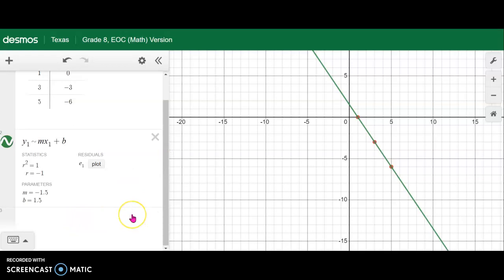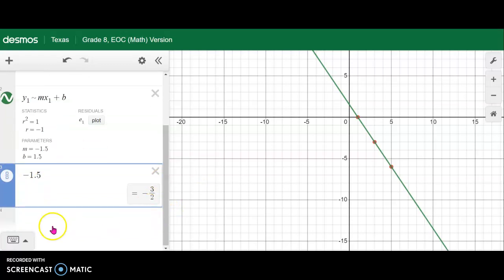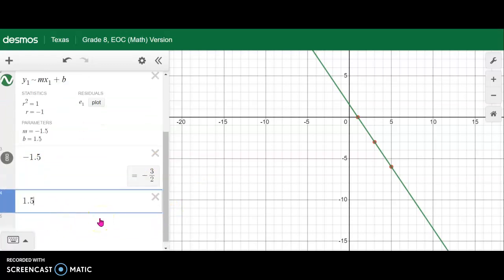Now on the STAR test a lot of times they want the slope or y-intercept as a fraction. So I'm going to show you how to make them into fractions. I'm going to type in the slope negative 1.5. And then see how right here on the left this comes up. Click it and look it makes it into a fraction for you. And I'm going to do the same thing for the y-intercept. So now I know my slope and my y-intercept.